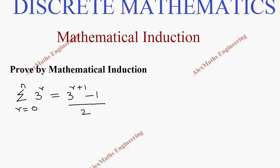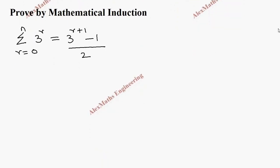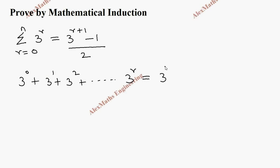Hi students, this is Alex. In this video we are going to prove by mathematical induction: summation r equal to 0 to m of 3 power r equals 3 power r plus 1 minus 1 by 2. The series starts from r equal to 0, so the first term is 3 power 0, second term is 3 power 1, third term is 3 power 2, plus dot dot dot till 3 power r, and on the other side we have 3 power r plus 1 minus 1 by 2.